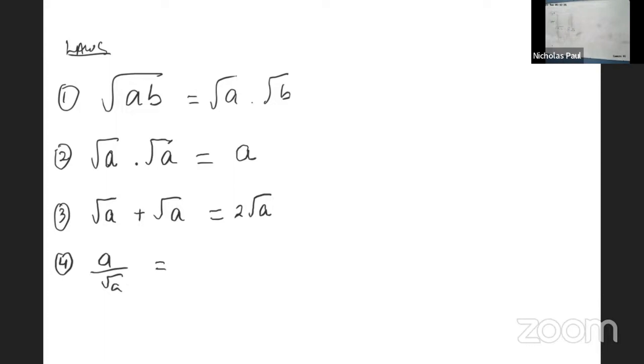It was a to the power of a half, that can kind of work, or you can write it like this: root a by root a, all over root a. It will cancel and you'll get root a. So a over root a is root a.